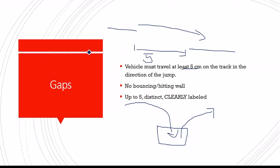And what they did to stop that was once you jump here, and you get to here, the ball has to roll five centimeters on the track in the direction of the jump, which would be this track. It has to go at least five centimeters before possibly making another jump. So bouncing would be like no centimeters, so you can't do that. And the most you can have is five gaps. I believe you can have more, but you have to clearly label them.